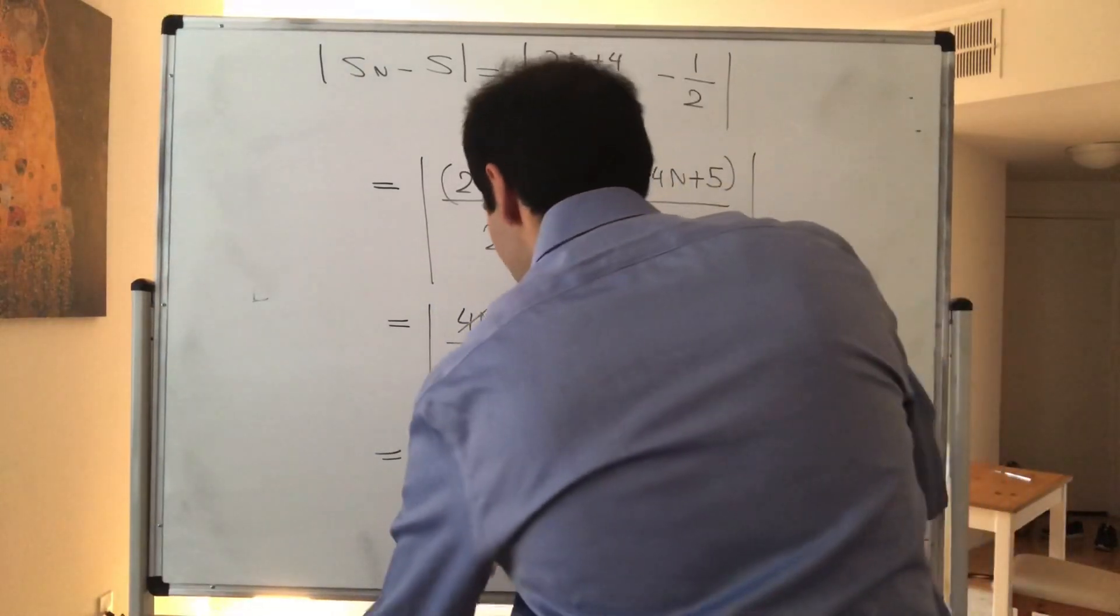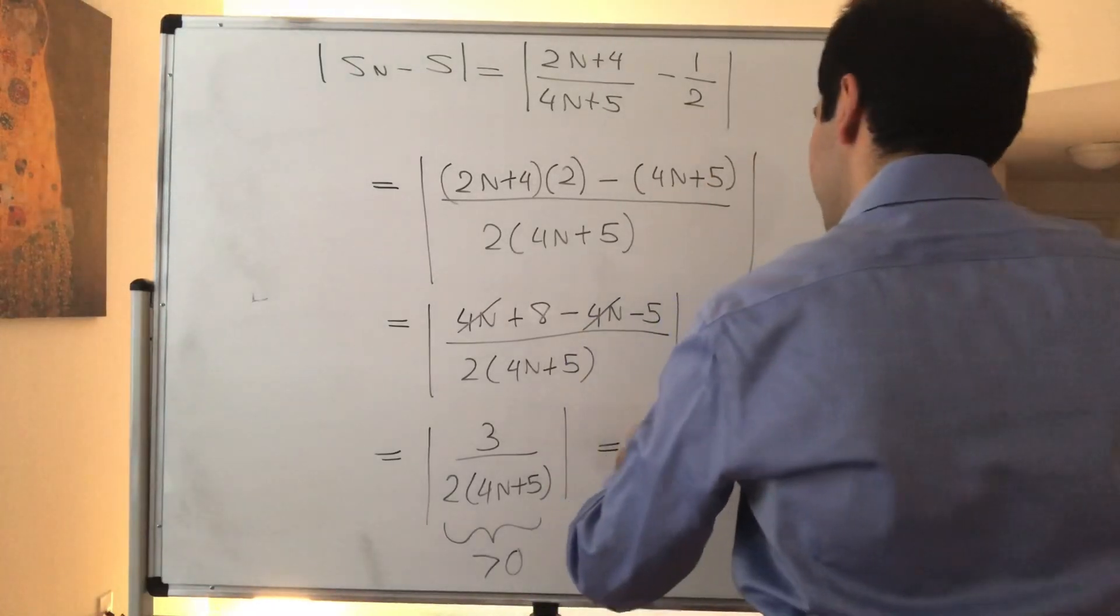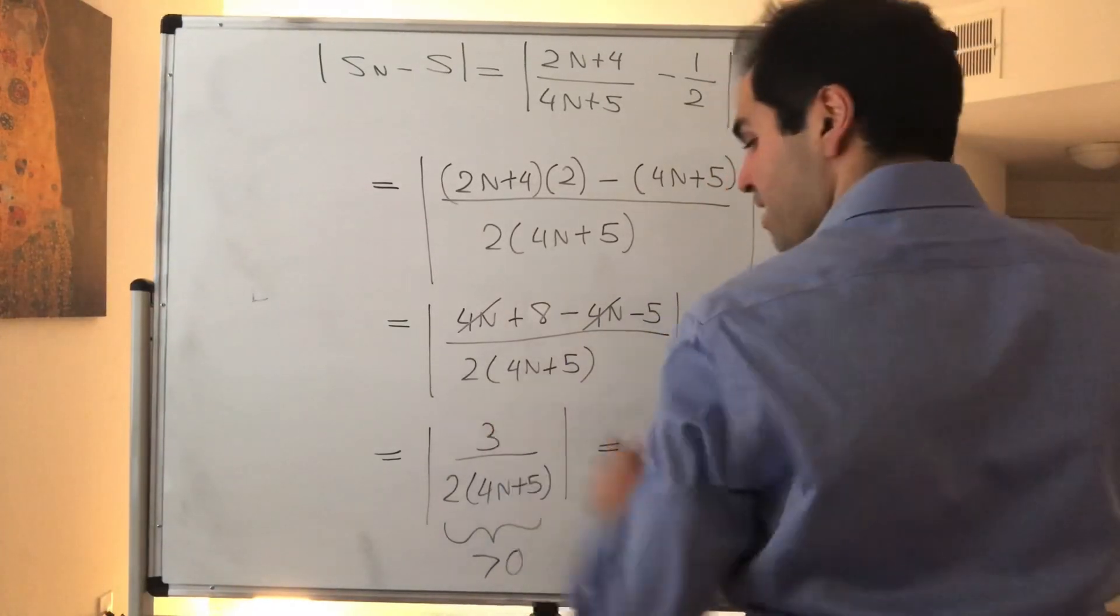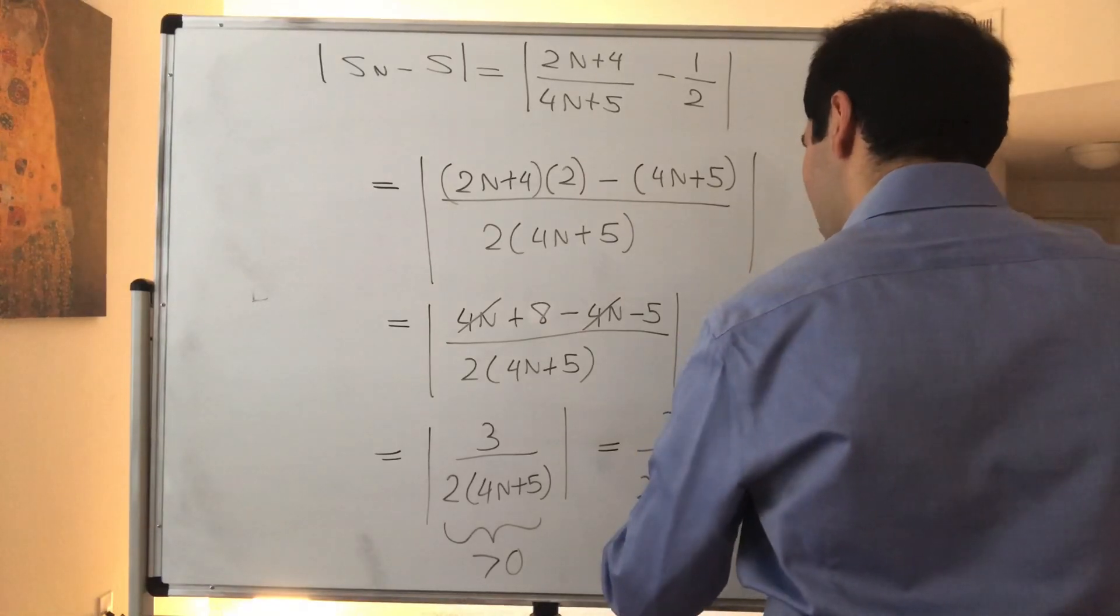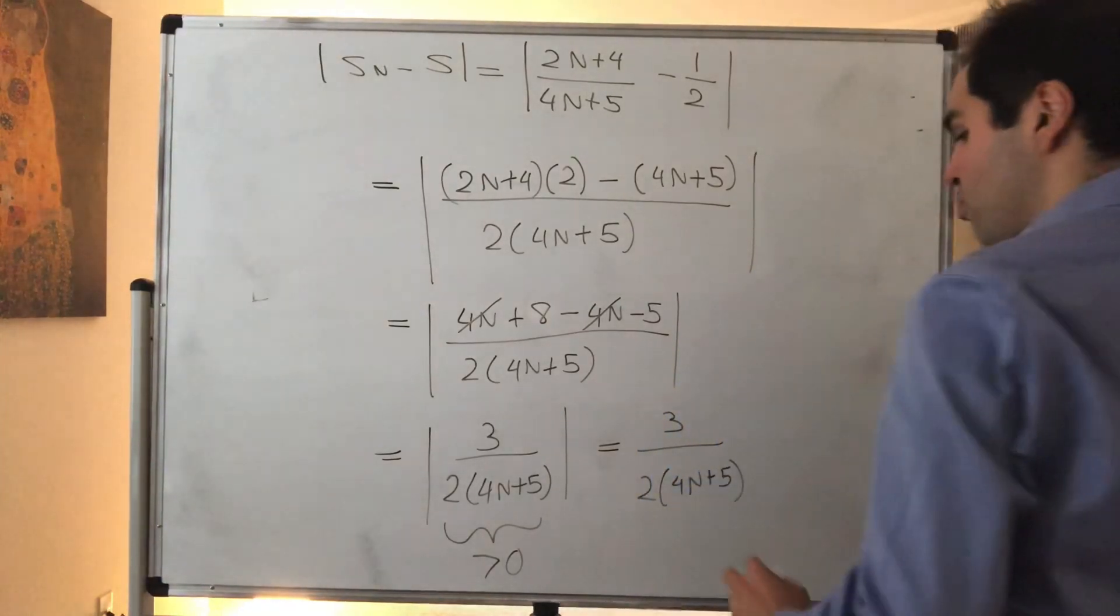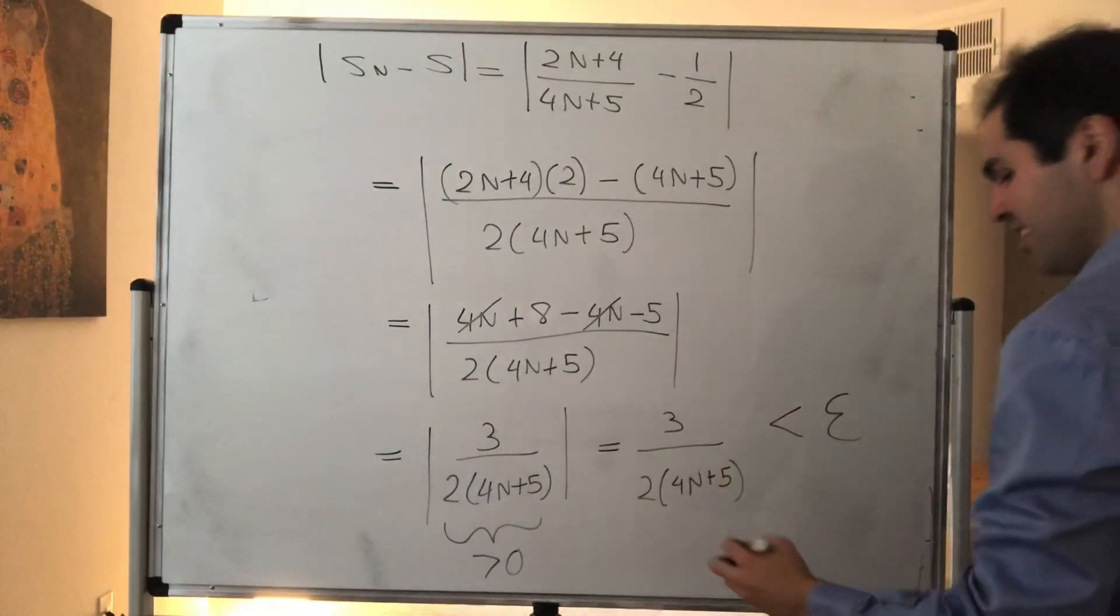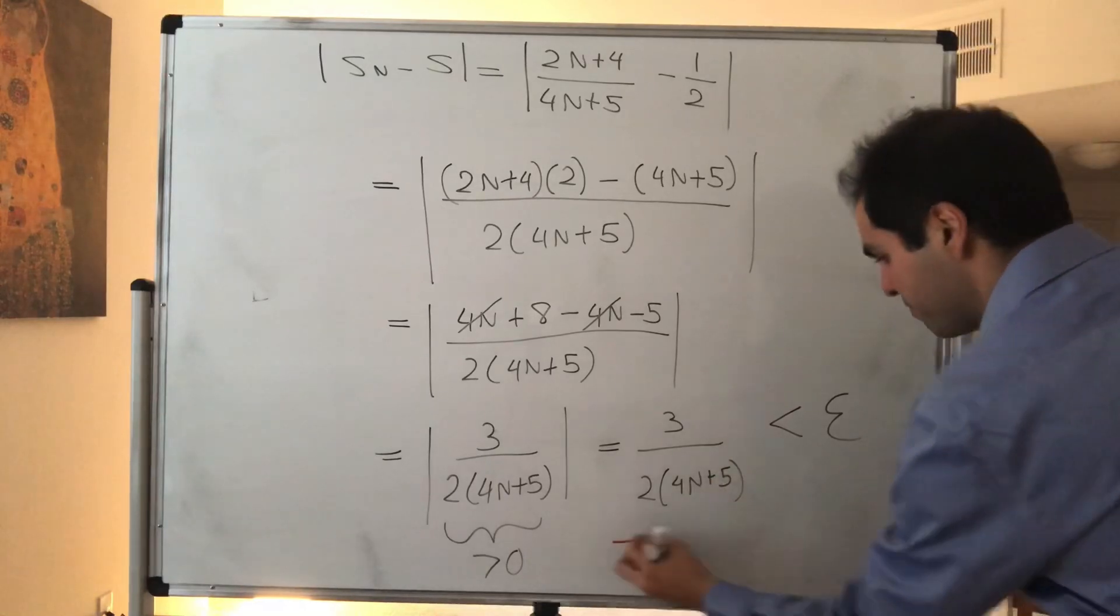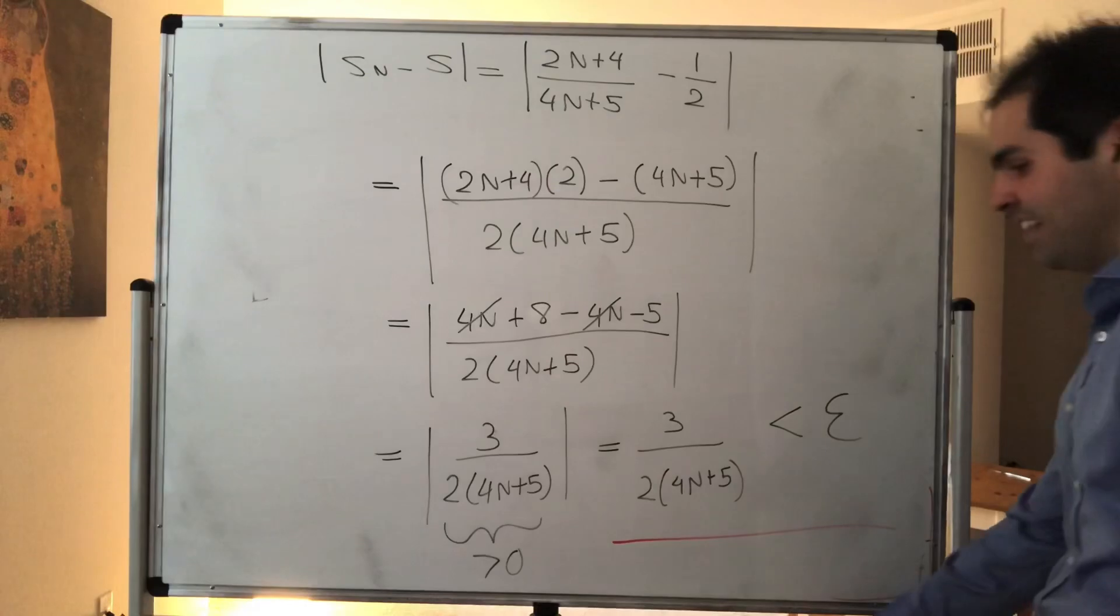And here's the thing, everything is positive here, so we get 3 over, so in other words, the absolute value disappears, and that's 3 over 2 times 4N plus 5. And remember, we want to set, we want all this gibberish to be less than epsilon. And in particular, what we can do, we can solve for N in this equation.